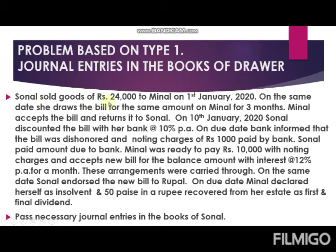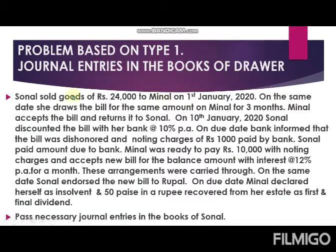Now we start reading one by one sentence and passing the journal entry. The first sentence is: Sonal sold goods of rupees 24,000 to Minal on 1st January 2020. Sonal sold goods means Sonal is the drawer and Minal is the drawee. Sonal is the seller — seller means drawer — and Minal is the buyer, means drawee.